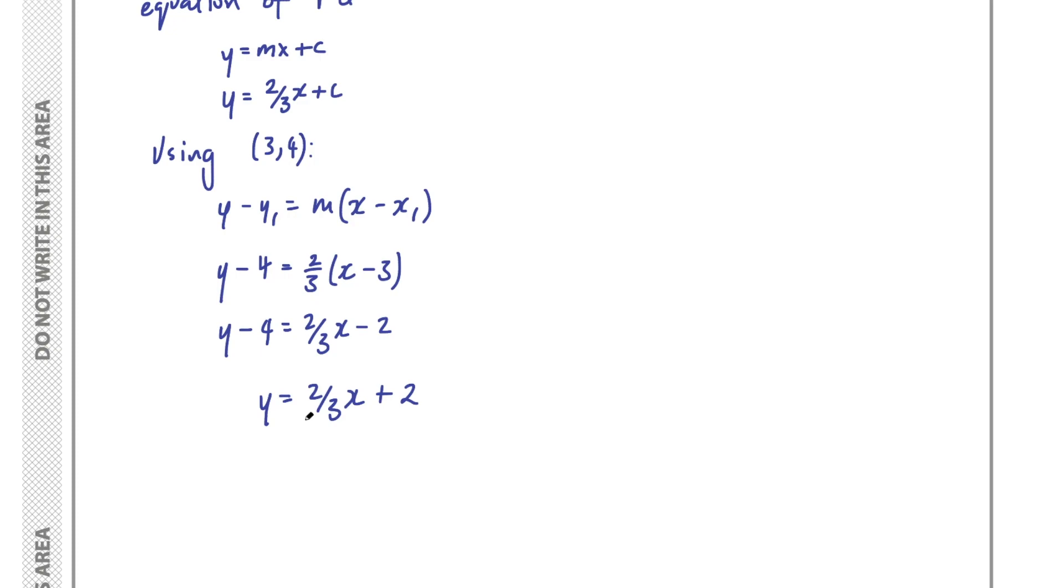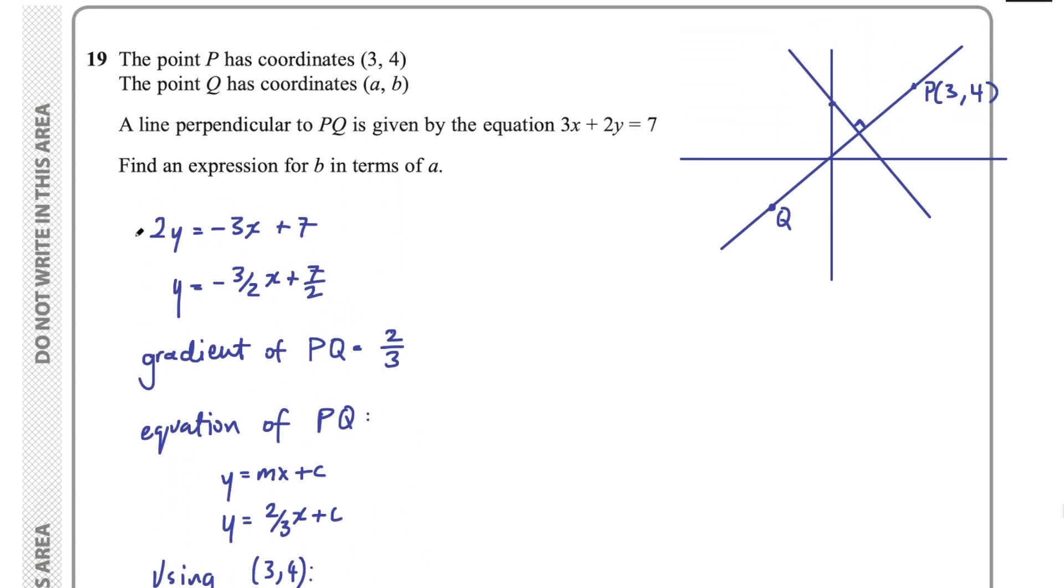Let's go back to the question again. We want an expression for B in terms of A. Well, B here is y, and A is the x-coordinate, so we want to plug those in for y and x in our equation of the line.